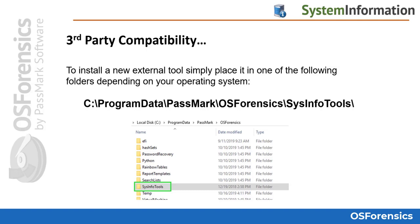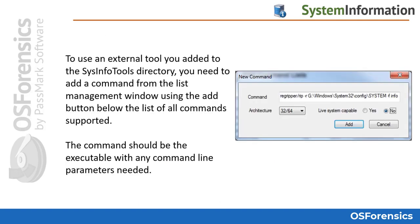One of those is the sys info tools folder, located at the file path displayed here in this slide. Here you can place the executables of third-party command-line tools — things such as Registry Ripper, Volatility, Encrypted Disk Detector, etc. — all placed here in this directory location.